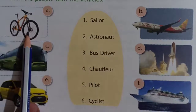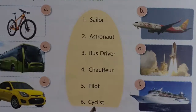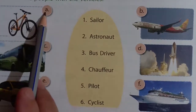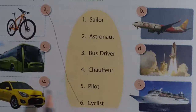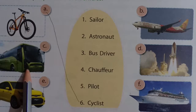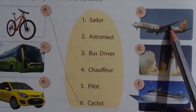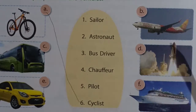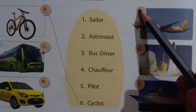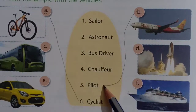This is a cycle, and who drives a cycle? Cyclist. So we will match A with number 6. B is an aeroplane. Who drives an aeroplane? Pilot. So match it with pilot.